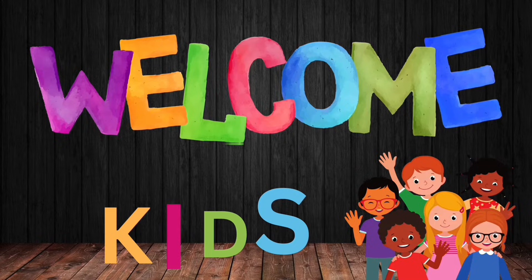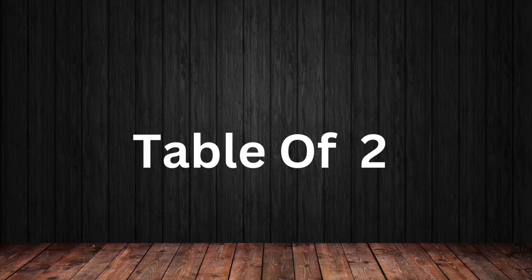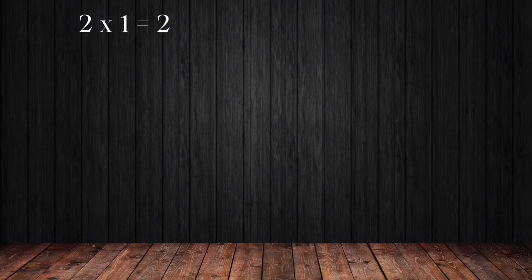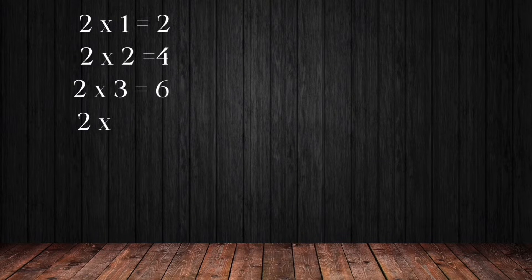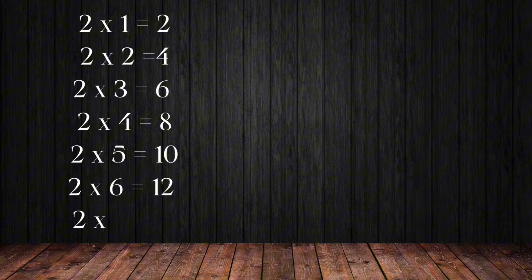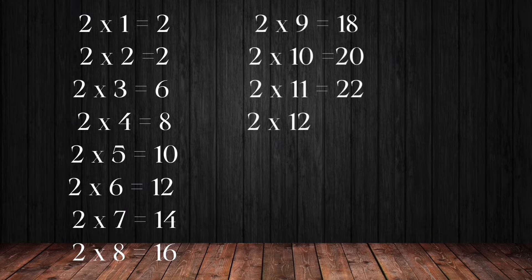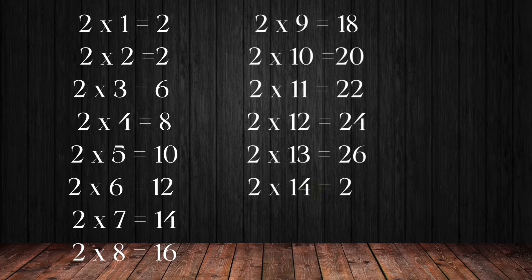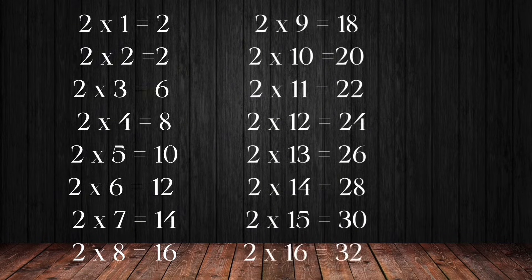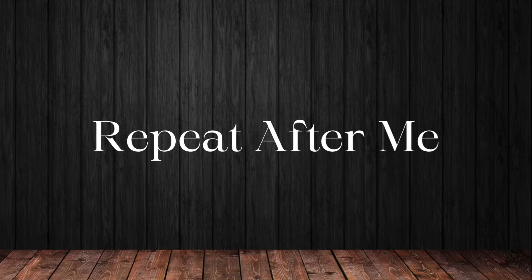Welcome kids! Table of two: one two is two, two twos are four, three twos are six, four twos are eight, five twos are ten, six twos are twelve, seven twos are fourteen, eight twos are sixteen, nine twos are eighteen, ten twos are twenty, eleven twos are twenty-two, twelve twos are twenty-four, thirteen twos are twenty-six, fourteen twos are twenty-eight, fifteen twos are thirty, sixteen twos are thirty-two. Repeat after me!